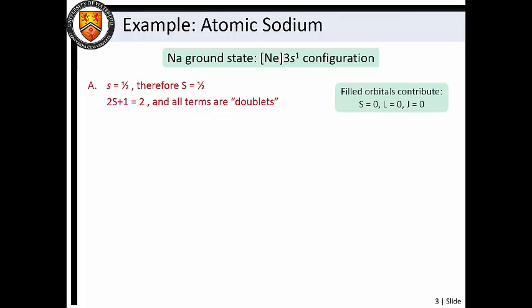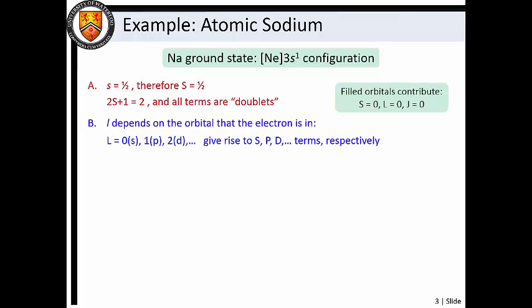The orbital angular momentum quantum number depends on the orbital in which the electron resides. Here, the electron is in an s orbital, so L equals 0. Since we are concerned only with this electron, the total orbital angular momentum quantum number is also 0. Thus, we have a doublet S term.